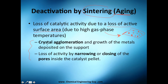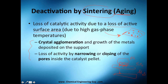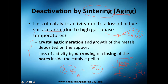There are two types of sintering. The first is crystal agglomeration and the growth of metals deposited on the support — for example, silica or alumina — where the metal, perhaps palladium or platinum, is interrupting or changing the shape of your actual catalyst. The second, and probably the most obvious one, is the narrowing or closing of pores inside the catalyst pellet. Before, a molecule could just barely fit through a tunnel in the pellet; due to high pressure or high temperatures, that pore becomes shorter, and now the same molecule won't fit and won't react.